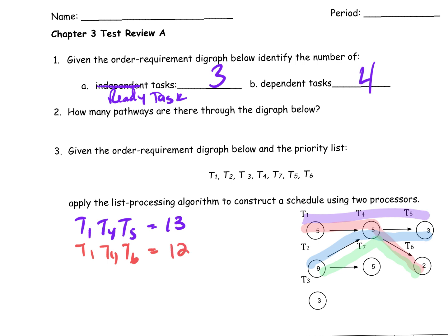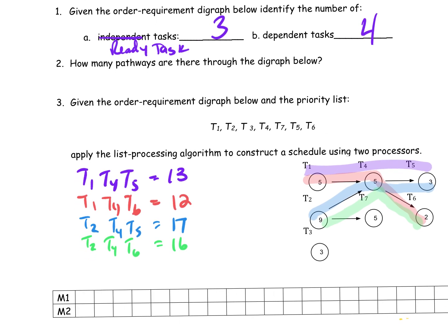My next path is Task 2, Task 4, and Task 5. I add up those completion times: that's 9 plus 5 plus 3, that's 17. And then I have another one starting at Task 2: Task 2, Task 4, Task 6, which is 9 plus 5 plus 2. And that's 16.